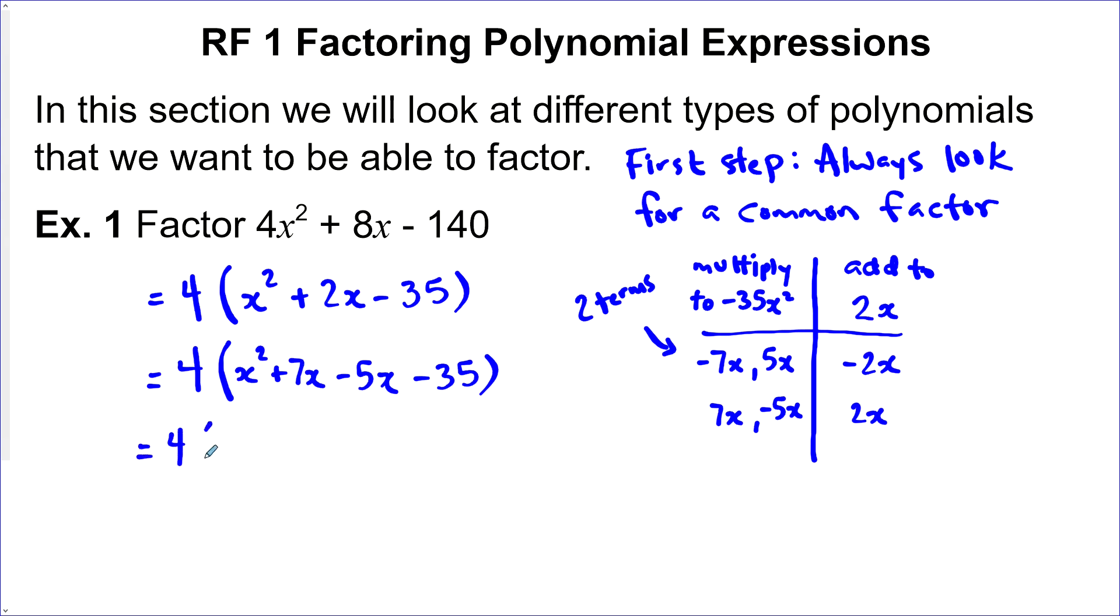Now we want to factor out what's common between the first two here and factor out what's common between the second two. So between the first two, there's an x that's common. We factor it out and we're left with an x plus 7. Between the last two terms here, there's a negative 5 that's common. Always take this sign, whatever it is, negative 5. And once we factor that out, we're left with an x plus 7.